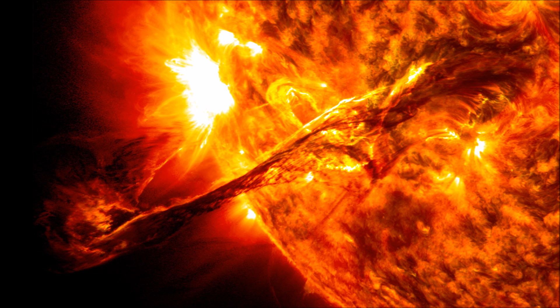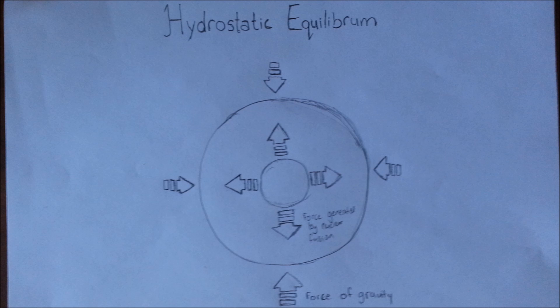The force generated by fusion opposes the force generated by gravity. In order for a star to be stable, these forces have to be in equilibrium. This state is called hydrostatic equilibrium.